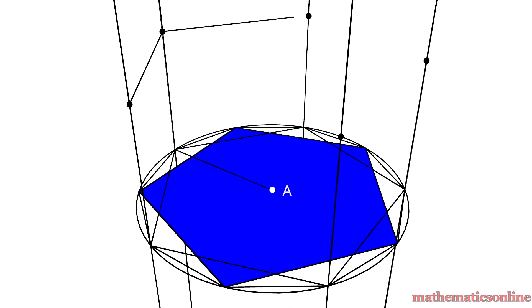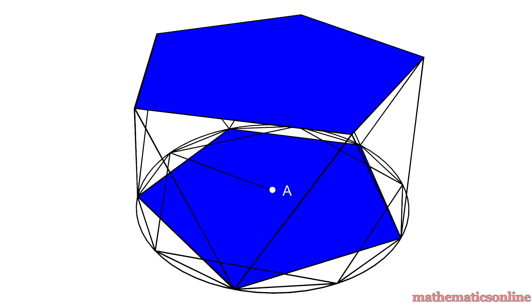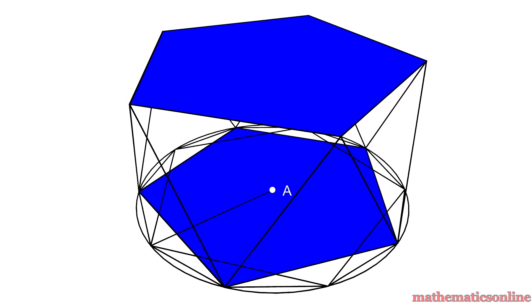If we connect the intersection points, we create a top pentagon plane. We can connect the vertices of the top and bottom planes with lines moving in a zigzag formation. This forms the body of the icosahedron.